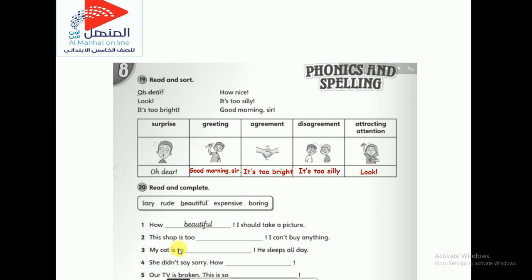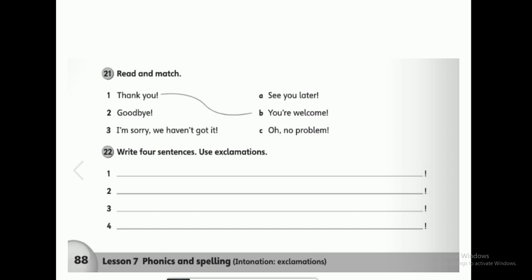Let's move to the second activity. Fill in the gaps with one of the exclamatory words. 'How beautiful! I should take a picture.' 'Excellent! This shop is too expensive, I can't buy anything.' 'My cat is so lazy — he sleeps all day.' Number four: 'She didn't say sorry. How rude!' — 'how' is rising, 'rude' is falling. 'Our TV is broken. This is so boring!'